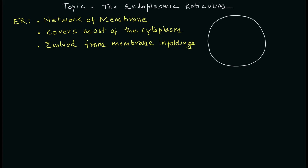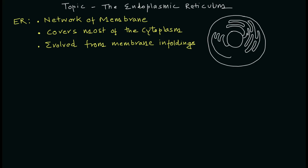If I want to draw the structure of this organelle, I will start from the center which is the nucleus, and then make all those infoldings — and making the flat sac-like structure. This is the typical structure of the rough endoplasmic reticulum.